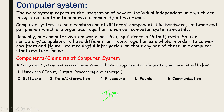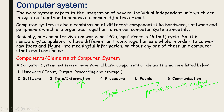In the IPO model, data is entered as input, the computer processes it, and then the output is produced as meaningful information. It is mandatory to have different units working together as a whole in order to convert raw facts and figures into meaningful information. Without any one of these units — input, processing, or output — the computer starts malfunctioning.